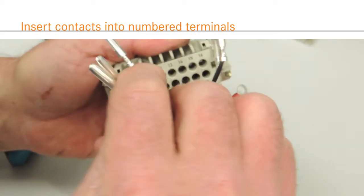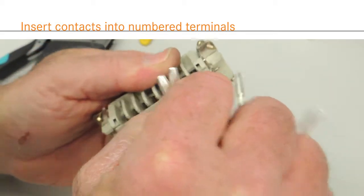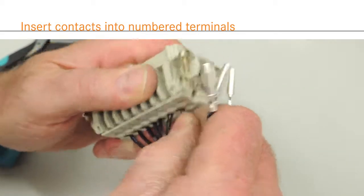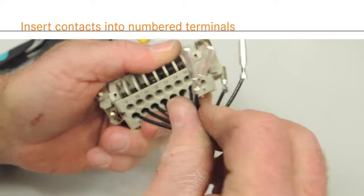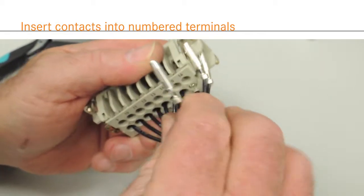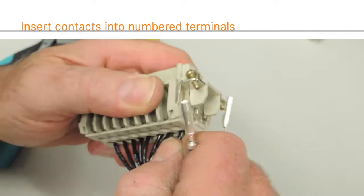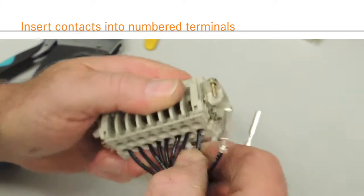Crimp termination is the strongest method of connector wiring. Crimp contacts are permanently affixed to the wire and provide the most reliable vibration protection. These kinds of inserts are also the easiest type to produce in large quantities.